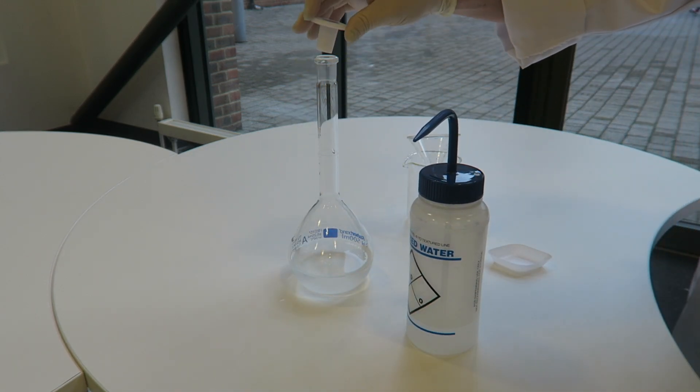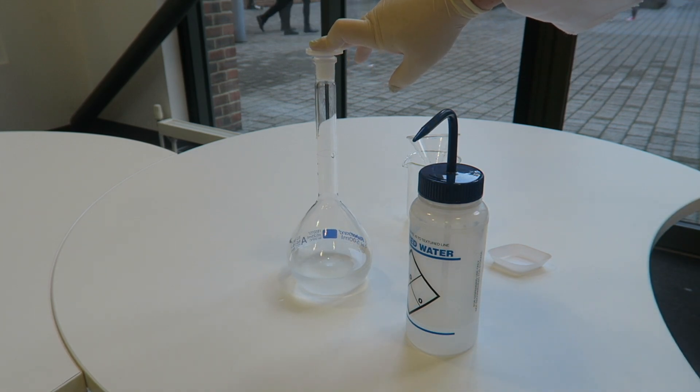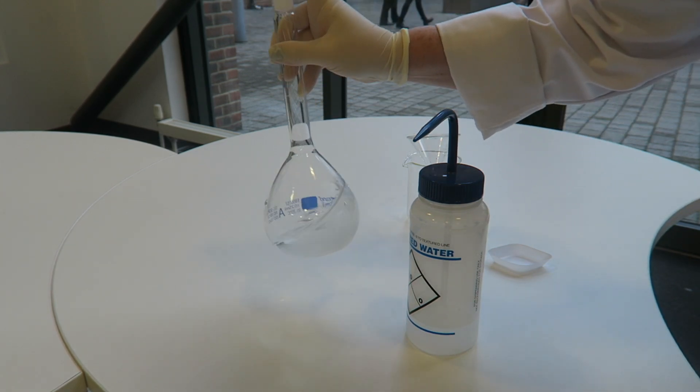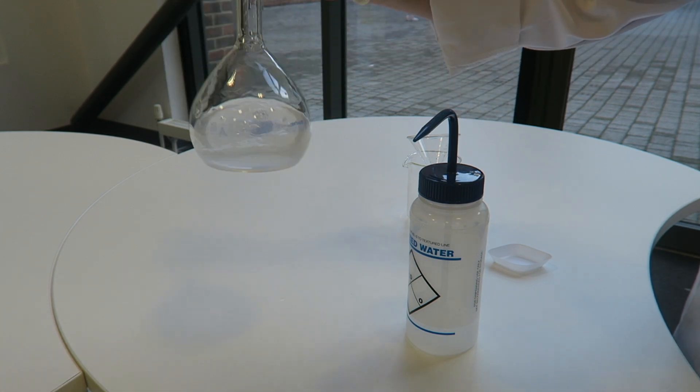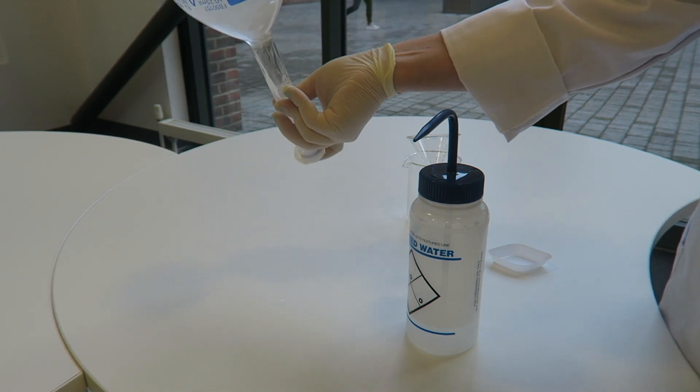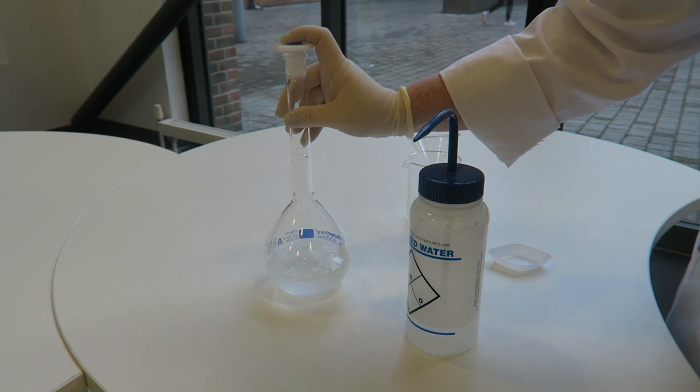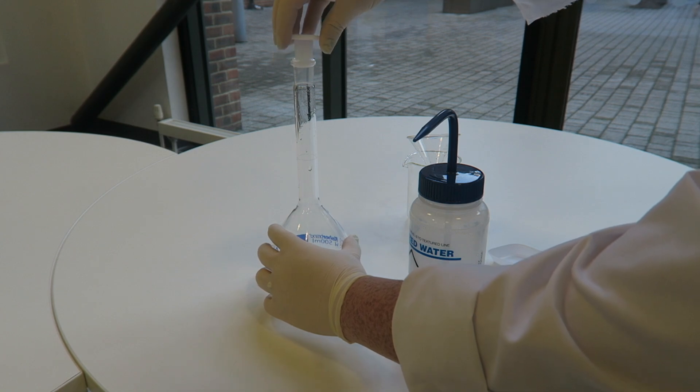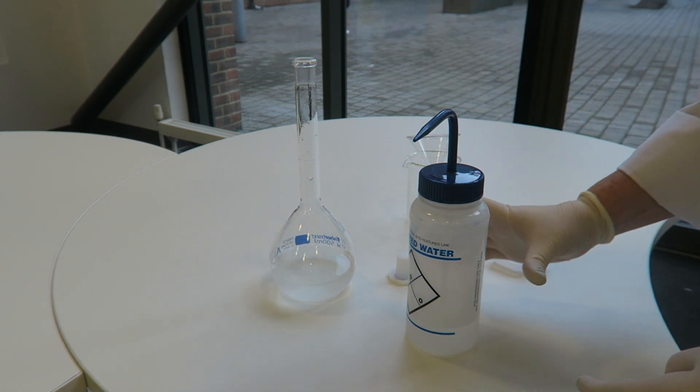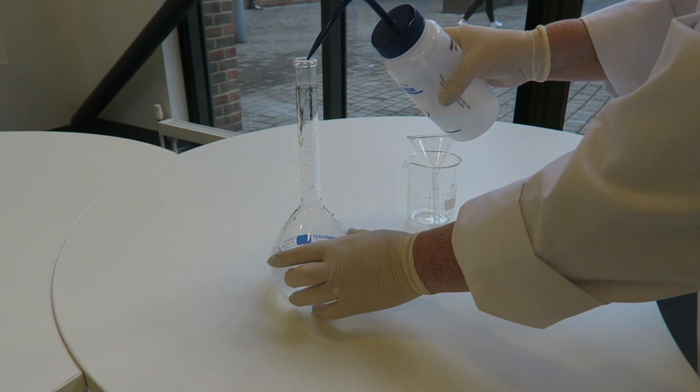What you can do at this point is to put the lid on. And if you think it needs a bit more mixing, then we can invert it. Again, what you need to do at that point is then clear any liquid that's on the neck.